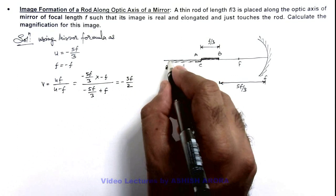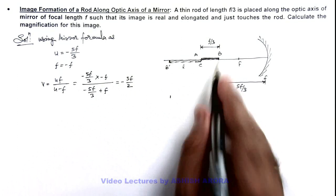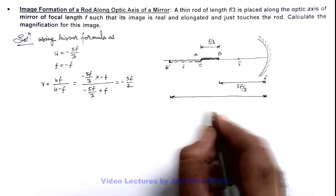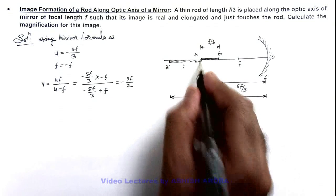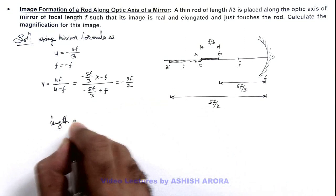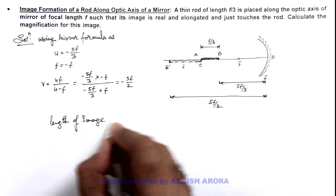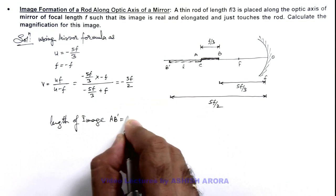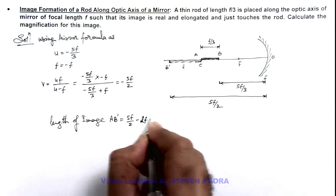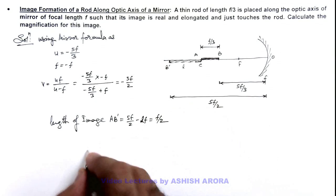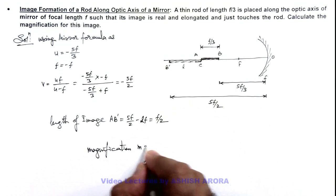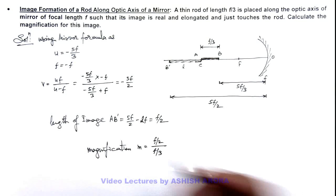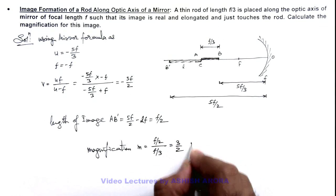That means this distance of point B dash which is the image of B is at a distance 5f by 2 from the pole of this mirror. So if we calculate the length of image, this can be calculated as directly it is AB dash which is 5f by 2 minus 2f so this will be f by 2. So if we calculate the magnification for this image, magnification can be written as f by 2 divided by f by 3, this is image length by object length, which will give us the value 3 by 2. That is the answer for this problem.